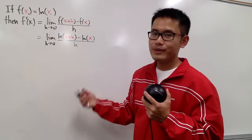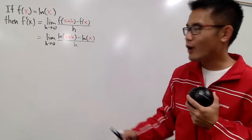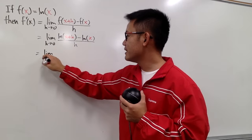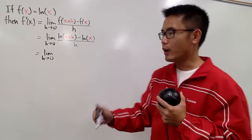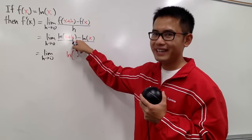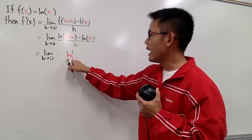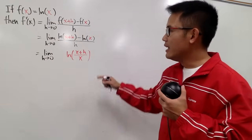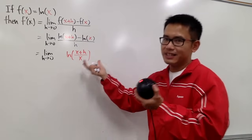On the top we have a difference of two ln's, and by the log property we can combine them into just one. So we take the limit as h goes to 0 of ln((x+h)/x), all over h. I don't want a complex fraction, so I'll write the over h as multiplying by 1/h — same thing.